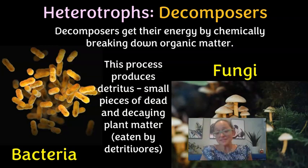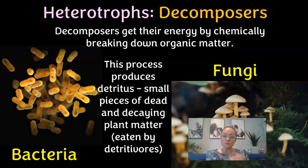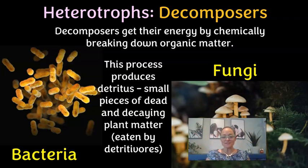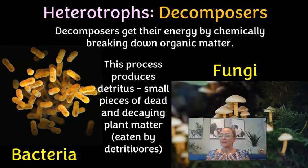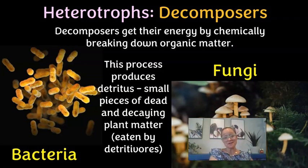The second category of heterotrophs is decomposers, which include bacteria and fungi. Unlike consumers, bacteria and fungi don't have mouths. They get their energy by chemically breaking down organic matter — sending chemicals out to break the bonds of plant material they're growing on, then absorbing that energy. This process produces detritus, small pieces of dead and decaying plant matter, which is then eaten by organisms like worms.